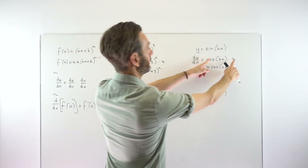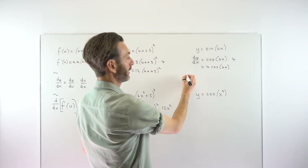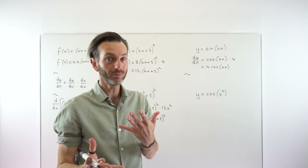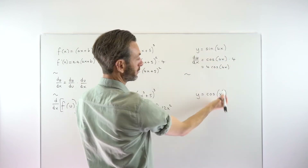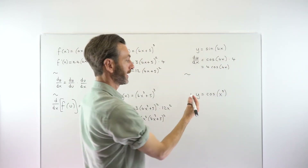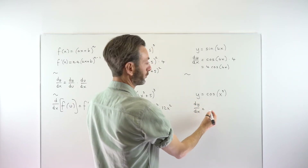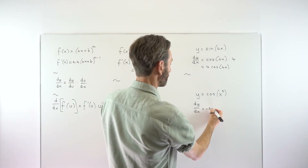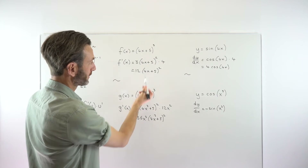It doesn't matter that it's a trigonometric function — you're doing the same thing. A lot of people don't get that: they think it's a different rule every time, but it's the same rule just manifesting in slightly different ways. Here I've upgraded the inside to a cubic function. The derivative of cosine is negative sine, so we get negative sine(x^3) — notice the inside of the bracket always stays the same.